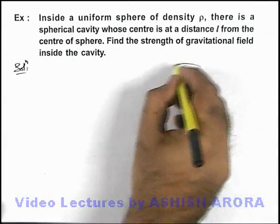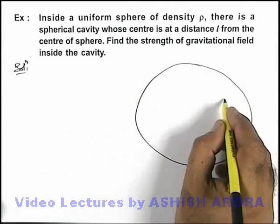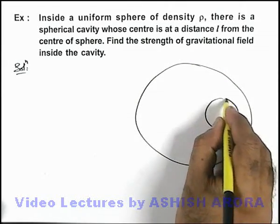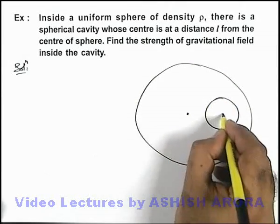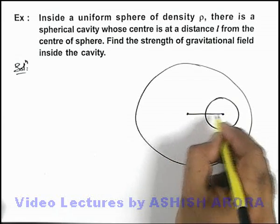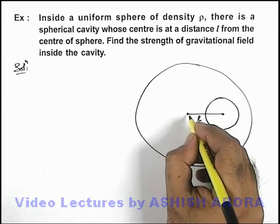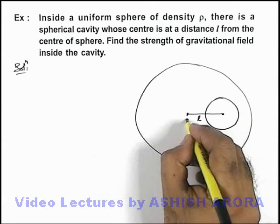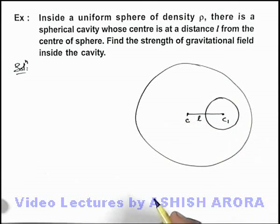Now the situation is like this: say this is a big sphere in which a cavity is made, and the centre of cavity is located at a distance l from the centre of this sphere. This is the centre of sphere and C1 is the centre of cavity.